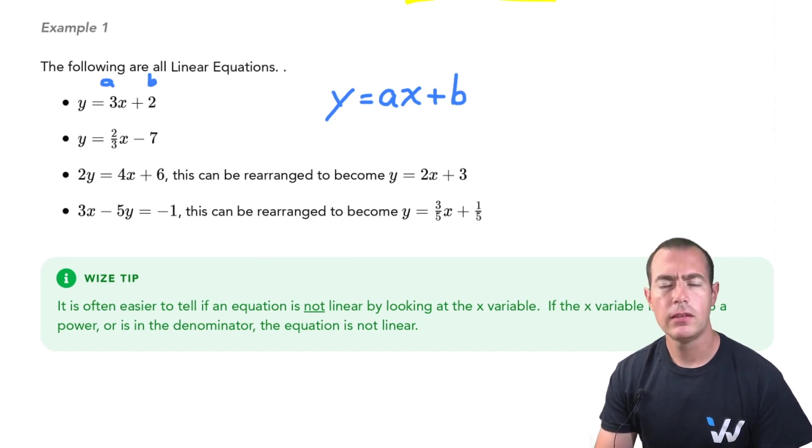Now in that definition it says as long as it can be written in that form, that's how you know it's a linear equation. So it even includes things like this equation. It doesn't look like it's in that form, but with a little bit of manipulation, sure enough, it can be put into that form. In which case this one turns into y equals 2x plus 3 and then sure enough it fits the form, so we can call it a linear equation.